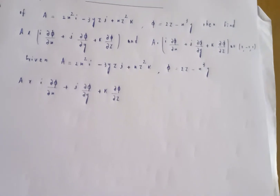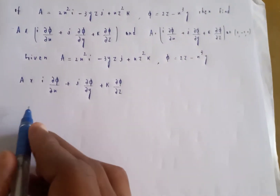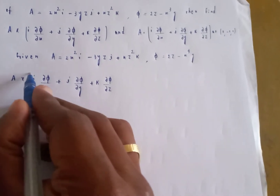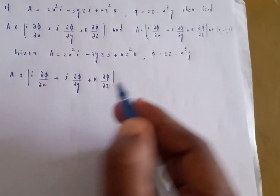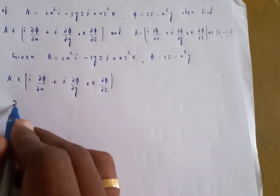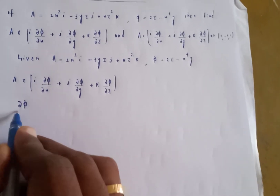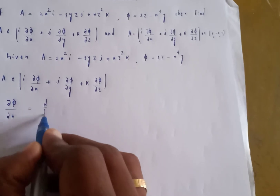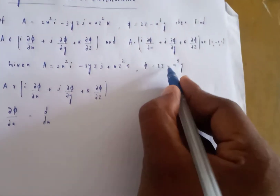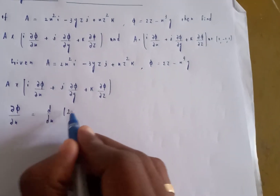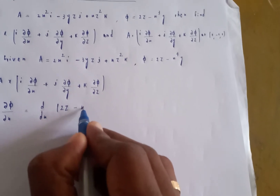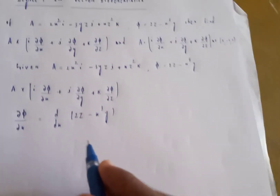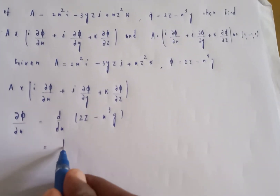First, let us find ∂φ/∂x. We need to differentiate phi with respect to x. So d/dx of phi, which is d/dx of (2z minus x³y). We differentiate with respect to x.